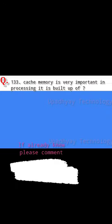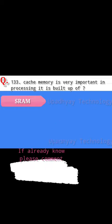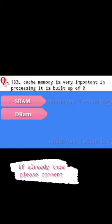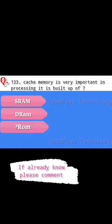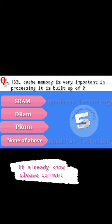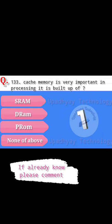Question number 133. Cache memory is very important in processing. It is built up of — and the options are: SRAM, DRAM, PROM, and none of the above. The correct answer is SRAM, that is static RAM.